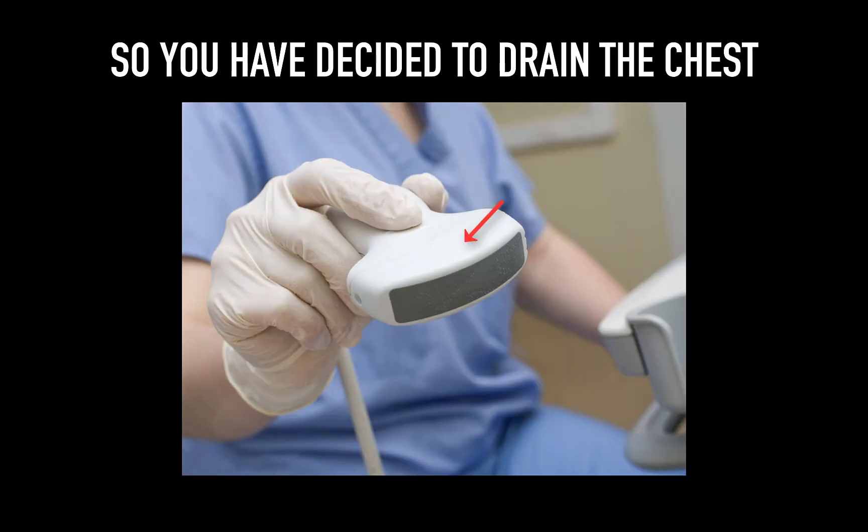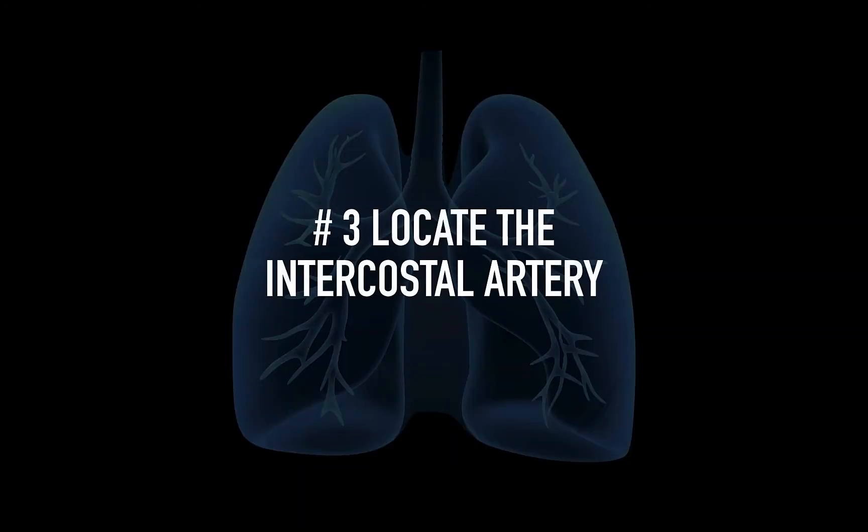If you've decided to drain the thorax based on size or indication, here are some tips to mitigate risk. First, locate the intercostal artery. I advise residents to aim for the rib and then go over it to avoid hitting the neurovascular bundle. The evidence for this technique is not strong, but it does make intuitive sense. On occasional patients, intercostal vessels can be quite tortuous, especially in the elderly. If you stay in the mid-axillary or posterior axillary line, most intercostals should not be crossing the intercostal space, but it can be helpful to use a linear probe to check for this.